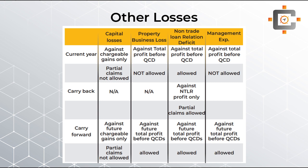The last loss type is management expenditure. Management expenditure can be set off against total profit using the current year option, and partial claims are not allowed for the current year option. You can also carry management expenditure forward and set it off against total profit once again. In the carry forward option, partial claims are allowed — as is generally the case with carry forward options across most loss types.